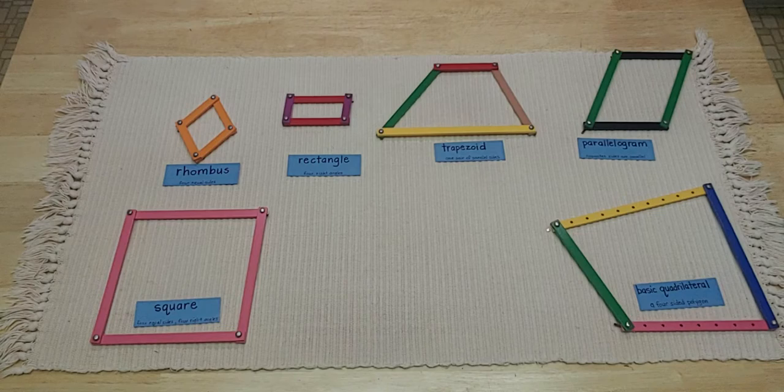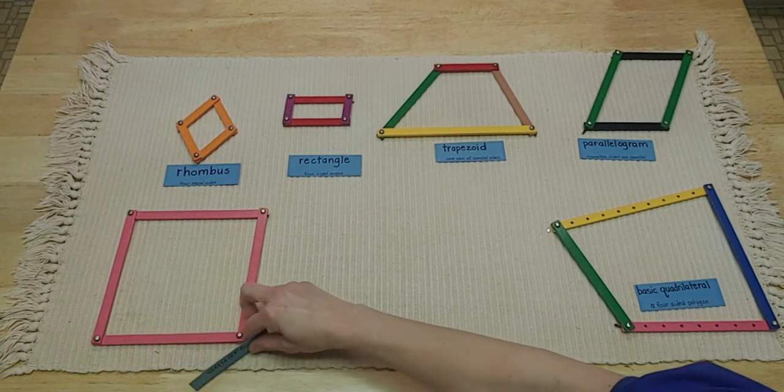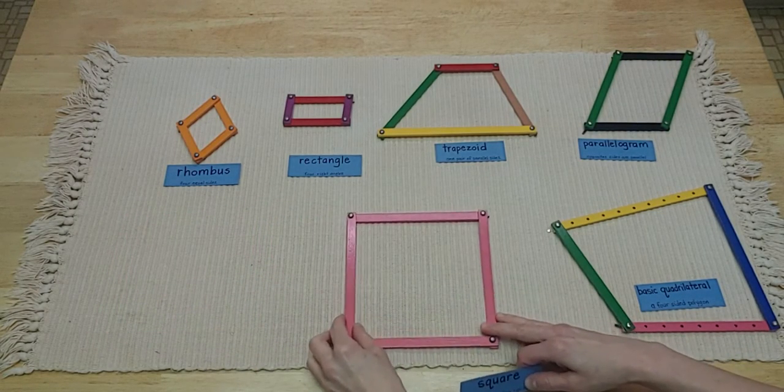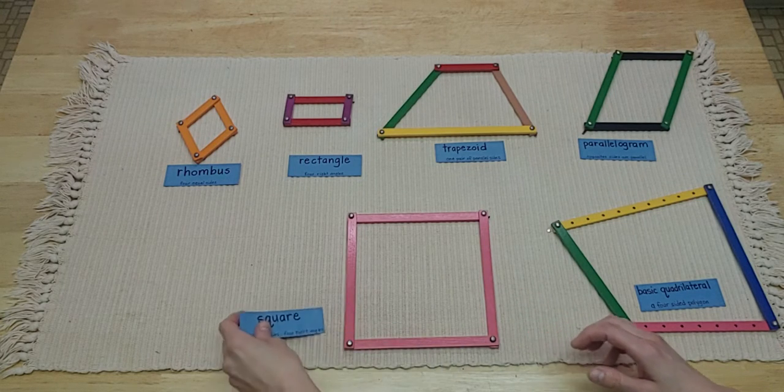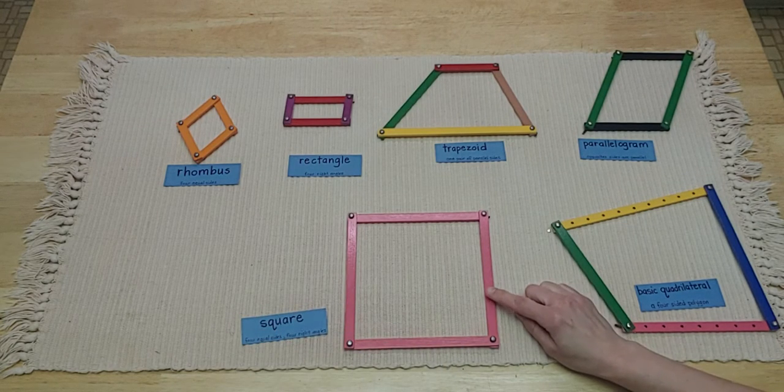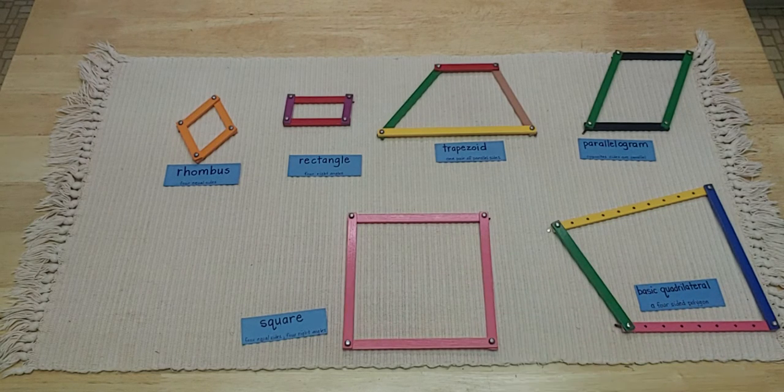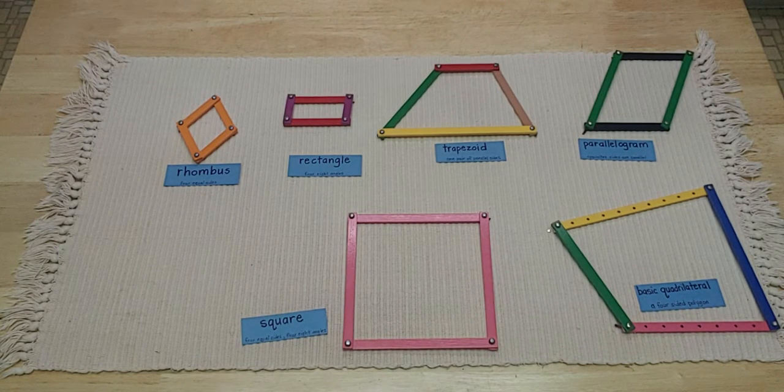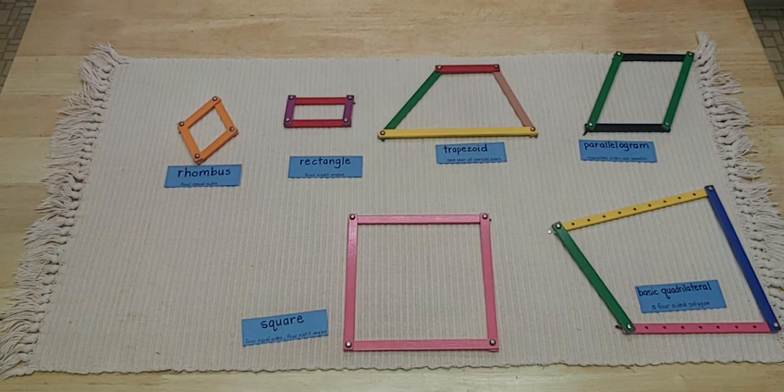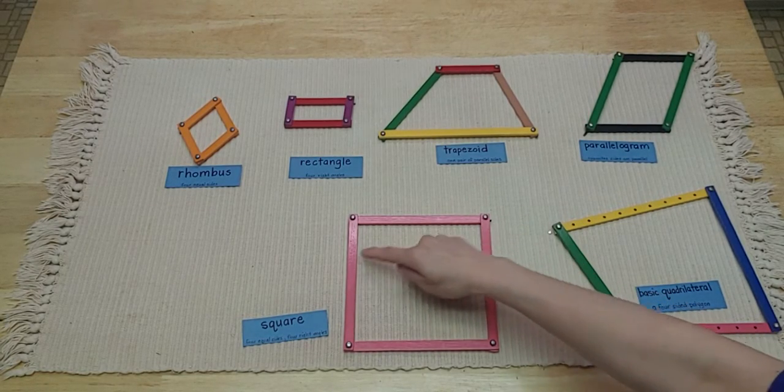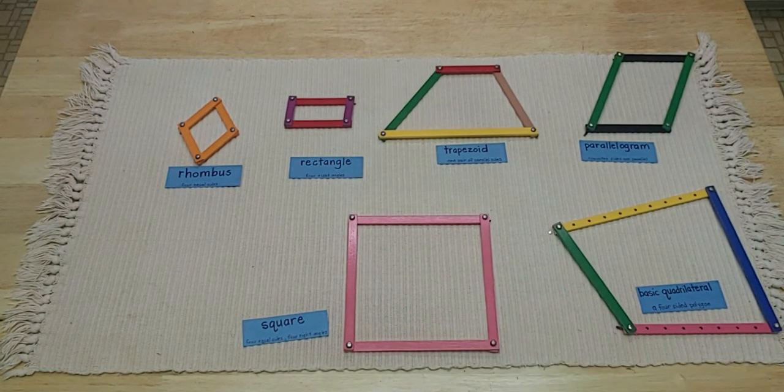A very popular quadrilateral is the square. Hello square! Squares are really special too because as you notice all the sides are pink, and that tells me that they're the same size. That's what makes squares so special. They have four equal sides and four right angles.